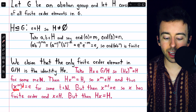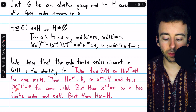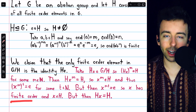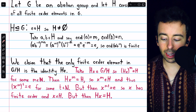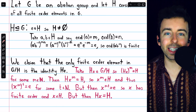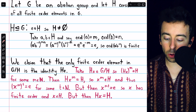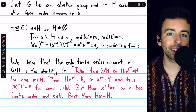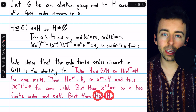And so x to the M to the T is equal to the identity for some positive integer T. But then by our exponent rules, if x to the M to the T is the identity, that means x to the M times T is the identity. But then that means x has finite order, because we can raise x to the power of some finite number M times T to produce the identity. Since x has finite order, it must be an element of H. But if x is an element of H, the identity coset — we know that cosets partition the group — so if x is in H, then the coset Hx, which also contains x, must equal H.